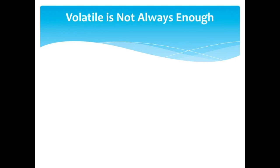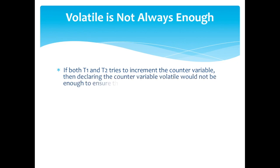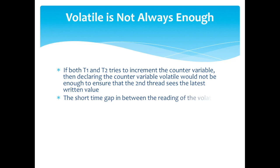Now, if both t1 and t2 tries to increment the counter variable, then declaring the counter variable volatile would not be enough to ensure that the second thread sees the latest written value. I mean, as soon as a thread needs to first read the value of a volatile variable, and based on that value generate a new value for the shared volatile variable, a volatile variable is no longer enough to guarantee correct visibility.